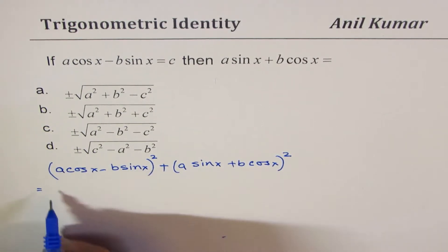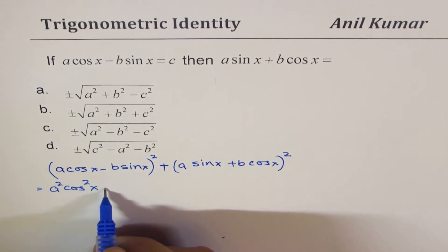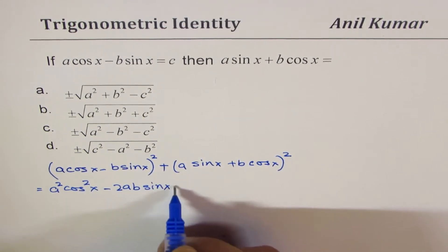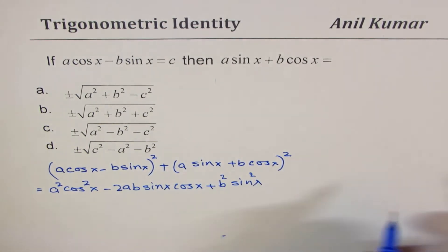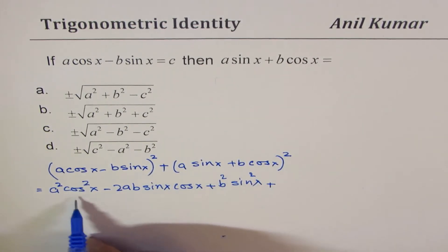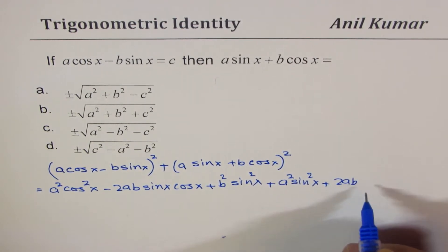That gives me A square cos square x minus 2 times AB sin x cos x and then B square sin square x. From the second term we get, that will be plus, rest will be same. We get A square sin square x plus 2AB sin x cos x plus B square cos square x.